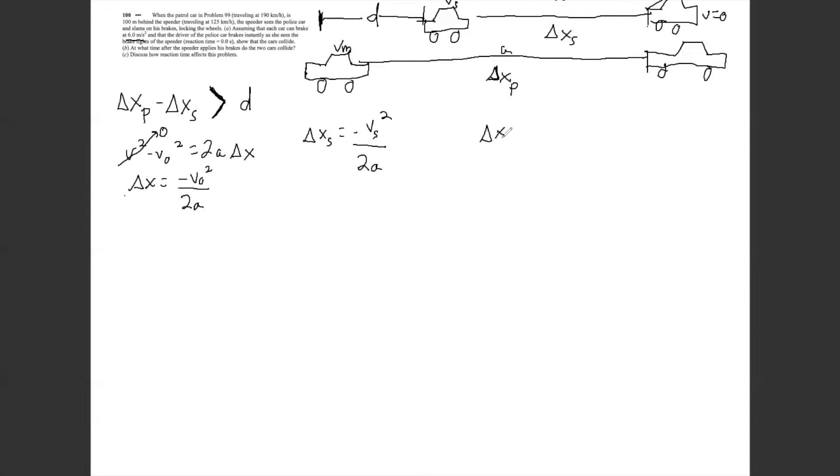And delta x of the police car, that's going to be negative vm squared over 2a. And so basically we're just trying to compare these things here. So how can we do that most broadly?